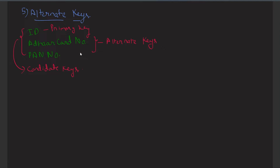So, we have three candidate keys. We have taken one as the primary key. The remaining two — three minus one equals two — so two will be the alternate keys. Now, it may happen that a table has no alternate key, because if the table has only one candidate key, then that will also be the primary key and it does not have any alternate keys.